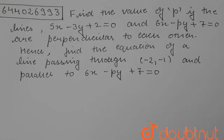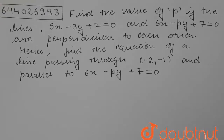Hello students. Today's question is: find the value of p if the lines 5x - 3y + 2 = 0 and 6x - py + 7 = 0 are perpendicular to each other. Hence, find the equation of the line passing through (-2, -1) and parallel to 6x - py + 7 = 0.